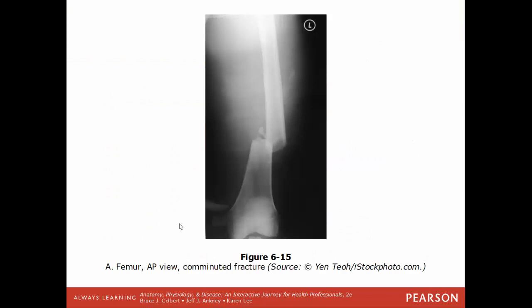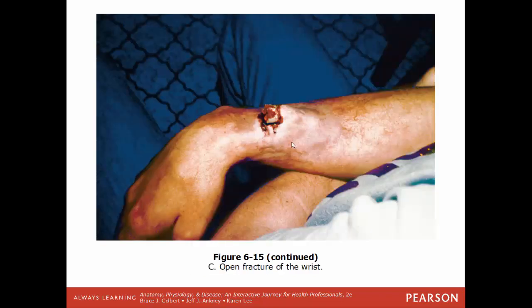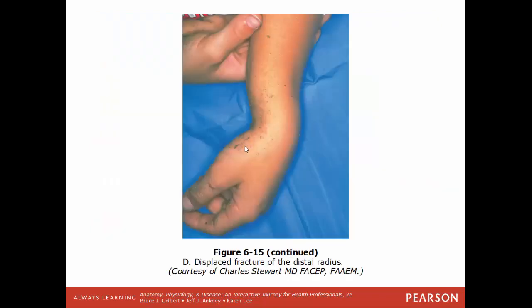Here are some images of common types of fractures. A comminuted fracture shows multiple pieces. A simple transverse fracture of the tibia is a closed fracture — the break is visible but not breaking through the skin. A compound or open fracture of the wrist shows the forearm bone protruding through the skin, at much higher risk for infection because it's exposed to the external environment. A displaced fracture of the distal radius — where it doesn't look correctly positioned.